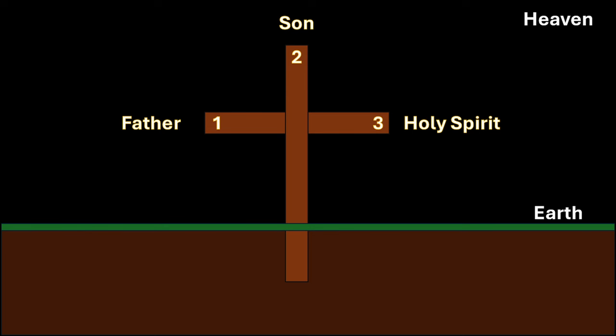You will notice that it is the second branch, the Son, who unites the heavens and the earth, as the top part of the branch touches the heavens while the bottom part touches the earth. This shows how Christ, through the hypostatic union, unites divinity and humanity in his person. The divinity dwells in heaven, whereas the humanity touches the earth.